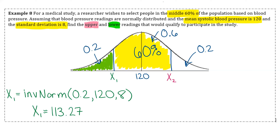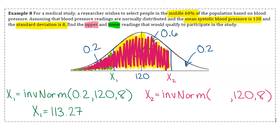To find x2, we need the area to the left of x2. The mean and sigma stay the same. The area to the left of x2 is 0.6 plus 0.2, which equals 0.8. So we do inverse norm of 0.8, with mean 120 and sigma 8, and we get x2 approximately 126.73.